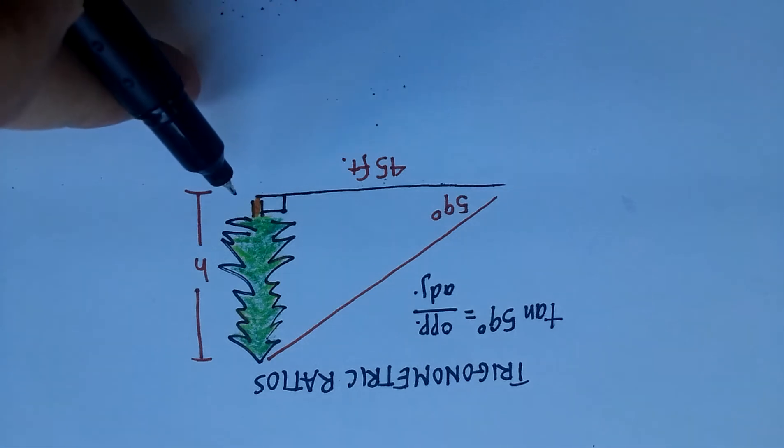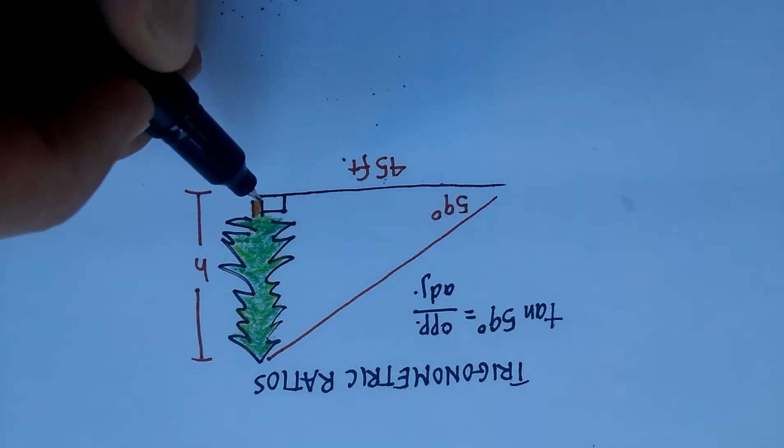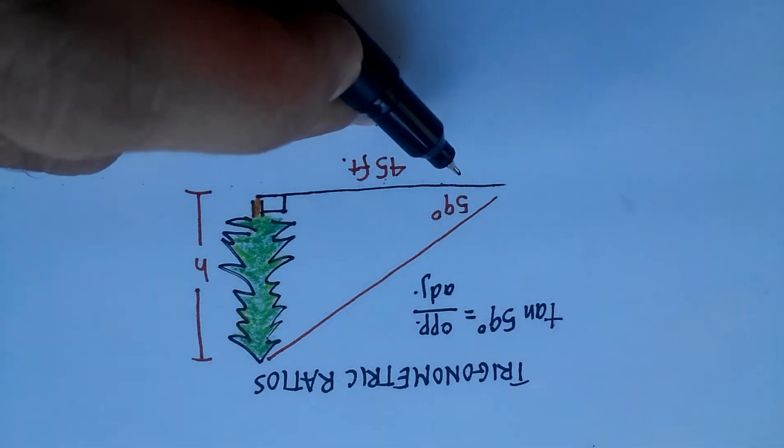Now, we know that we're standing 45 feet away from the base of the tree, and that actually forms our right angle. We're assuming a level ground.